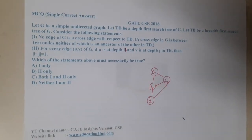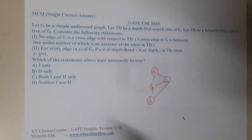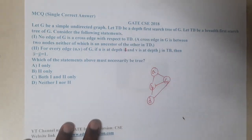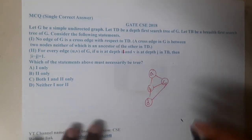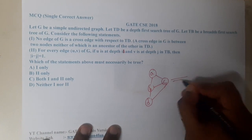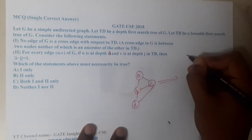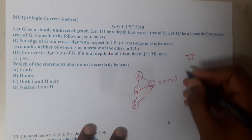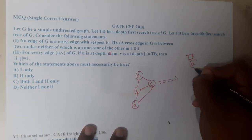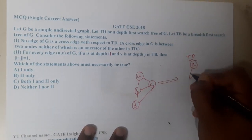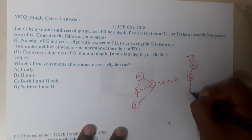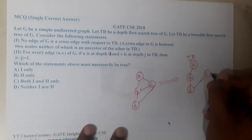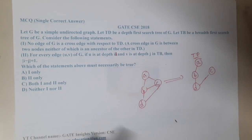Let TD be the depth first search of the graph. We are drawing TD, that is the depth first search. If I start at A, I go to B; from B I go to D; from D I go to C. This is the depth first search tree.